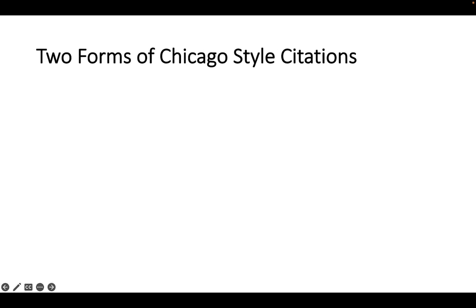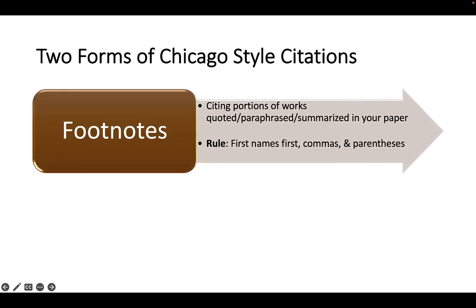Citations in Chicago style come in two forms depending on where you see them — in notes or in bibliographies. In footnotes, citations refer to specifically quoted, paraphrased, or summarized documents. The general rule for footnotes: the first name comes first, there are lots of commas, and there are parentheses. Just think: first name first, commas, parentheses — and that will help you remember how to do citations in footnotes.